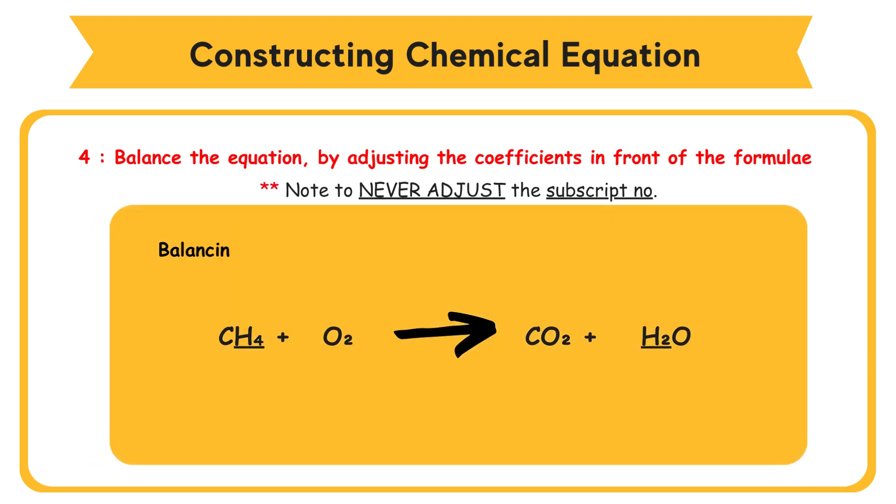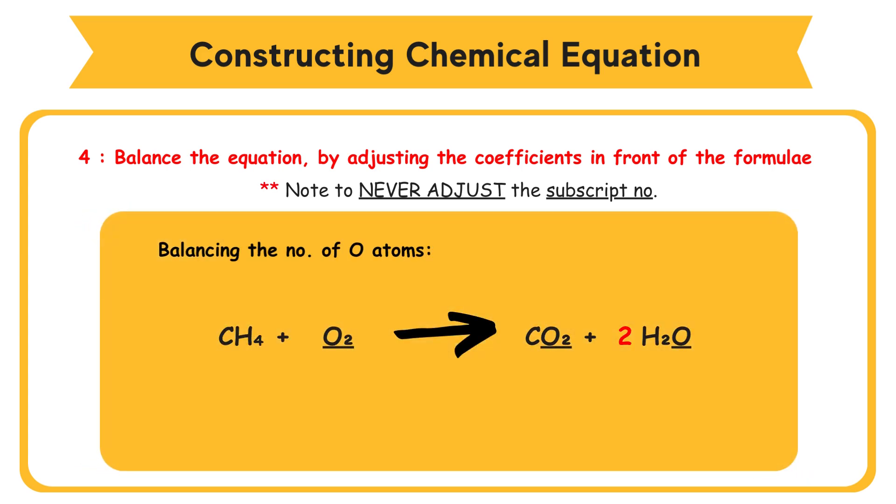Balancing the number of H atoms: CH4 plus O2 reacts to produce CO2 plus 2H2O. Balancing the number of O atoms: CH4 plus 2O2 reacts to produce CO2 plus 2H2O.